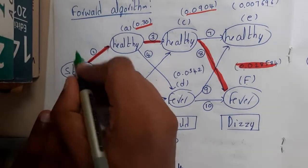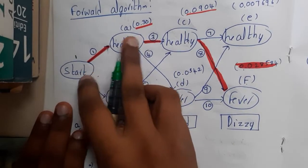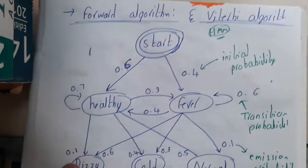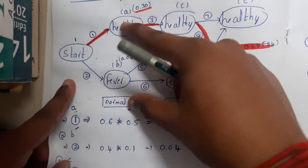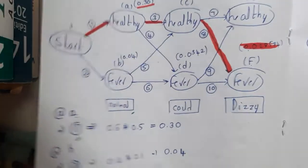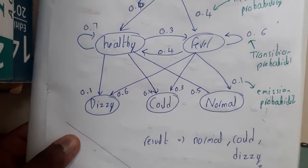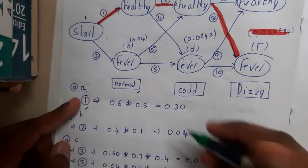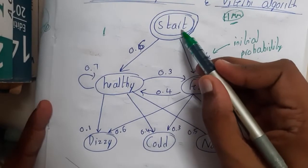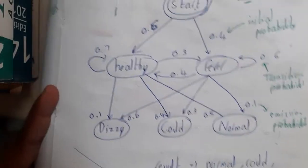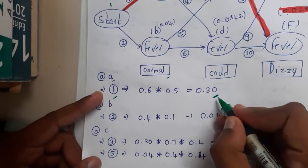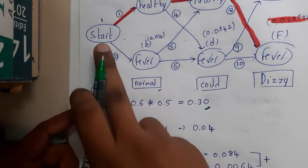At Start we treat the value as 1. From Start to Healthy the probability is 0.6. From Healthy to Normal (the emission) the probability is 0.5. So the value at node A is 0.6 × 0.5 = 0.30. In simple logic, this just traces the flow: you went from Start to Healthy, then from Healthy to Normal.